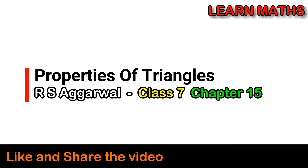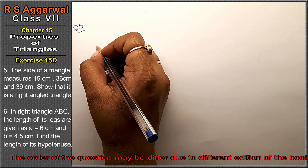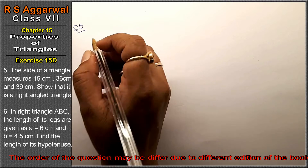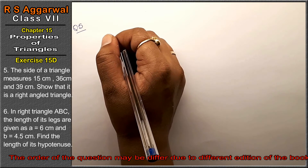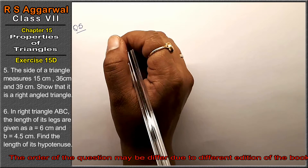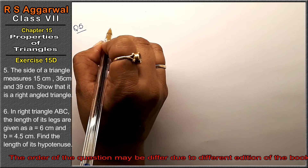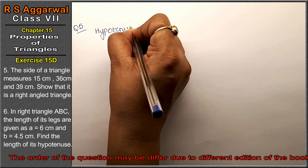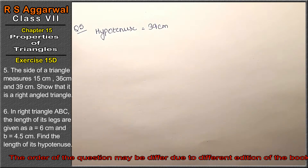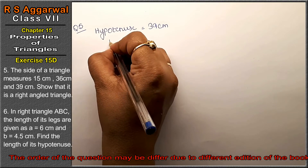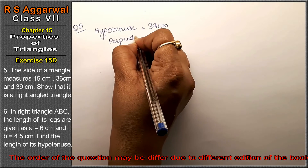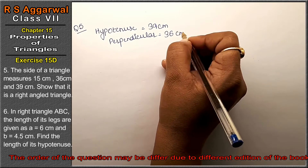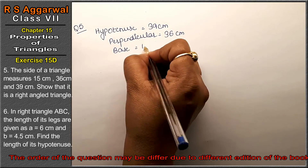Let's do question number 5 of exercise 15D, that is the properties of triangle. Question number 5: the sides of a triangle measure 15 cm, 36 cm, and 39 cm. Show that it is a right triangle. Friends, the biggest side is the hypotenuse, so hypotenuse equals 39 cm. We will take perpendicular as 36 cm and base as 15 cm.